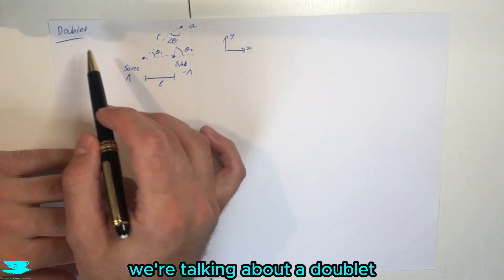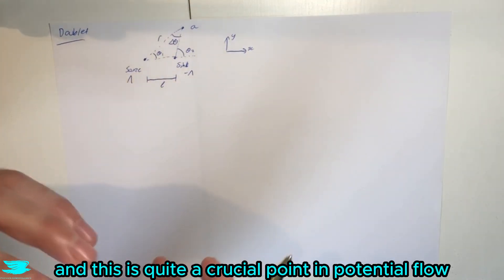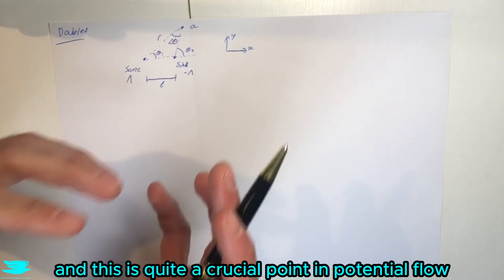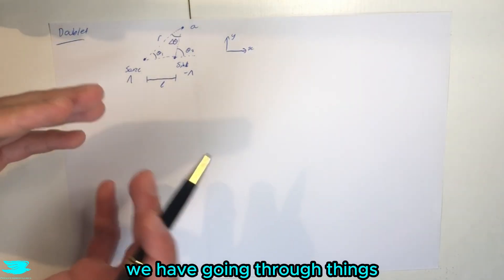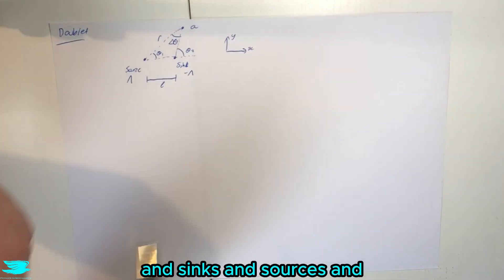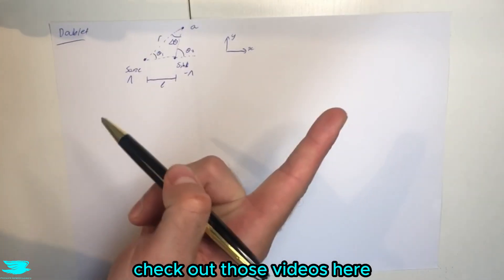What is up amigos? Today we're talking about a doublet and this is quite a crucial point in potential flow and two-dimensional flow. So in the past weeks we're going through things like the stream function and sources. If you haven't checked out those videos, check out those videos here.